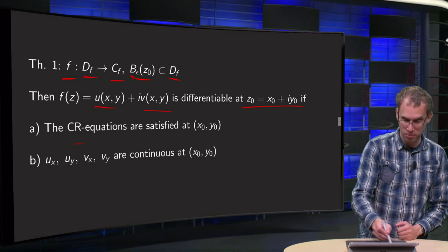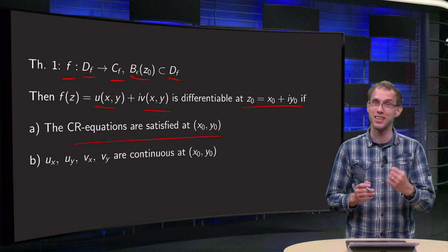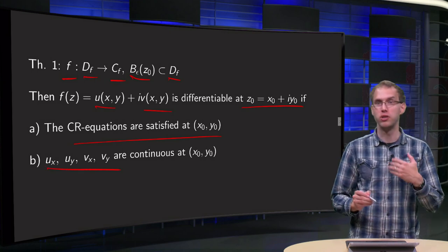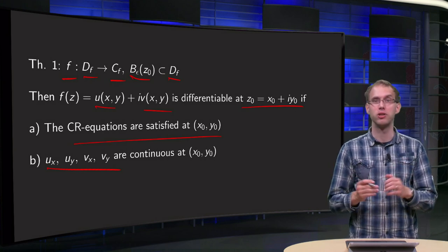if both the Cauchy-Riemann equations are satisfied, you knew that already, that was a necessary condition. It's sufficient if also the ux, uy, vx and vy are all continuous at x0, y0. And then you are done.